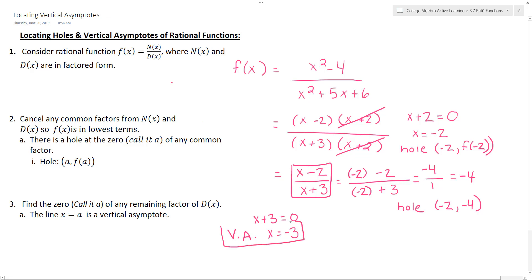That would complete this video on finding the holes and vertical asymptotes of a rational function.